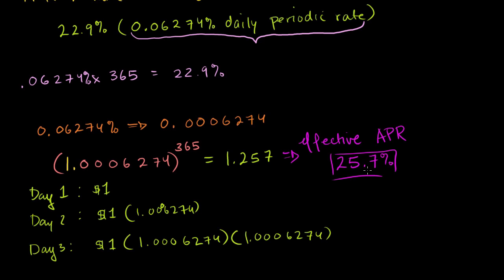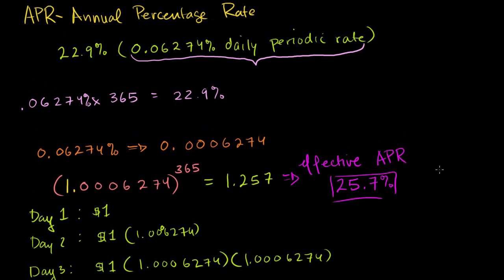You might say that's not too far off from the reported 22.9% APR—it's only a 3% difference between roughly 23% and 26%. But if you look at compounding interest videos, you'll see every percentage point really matters,